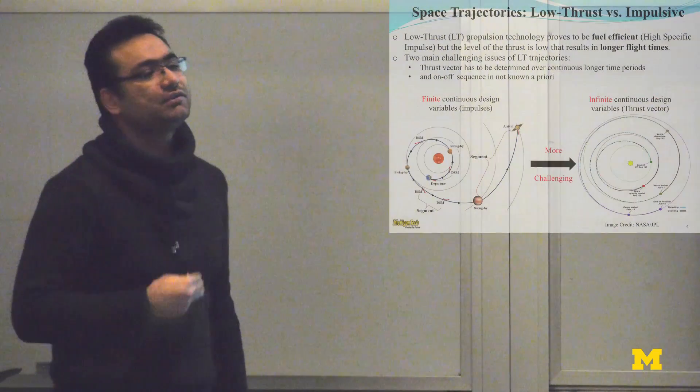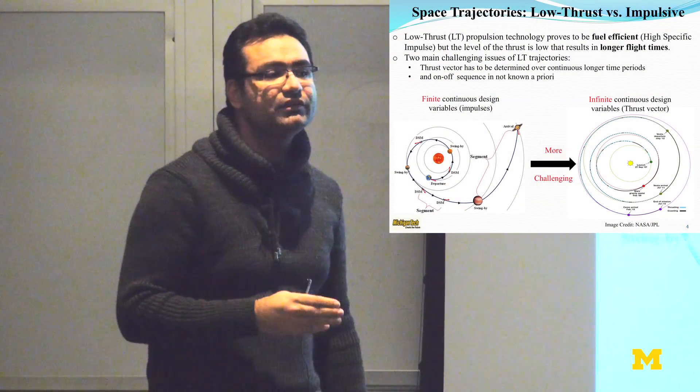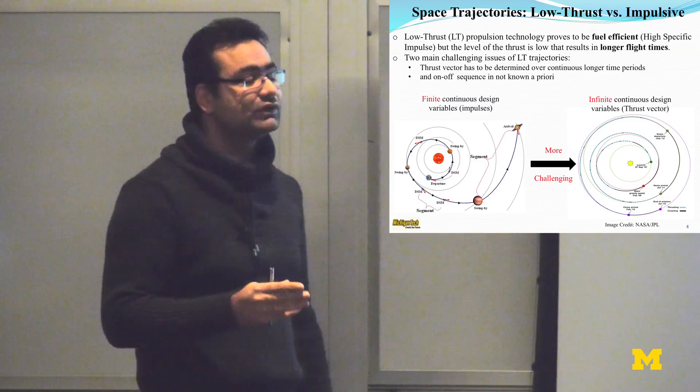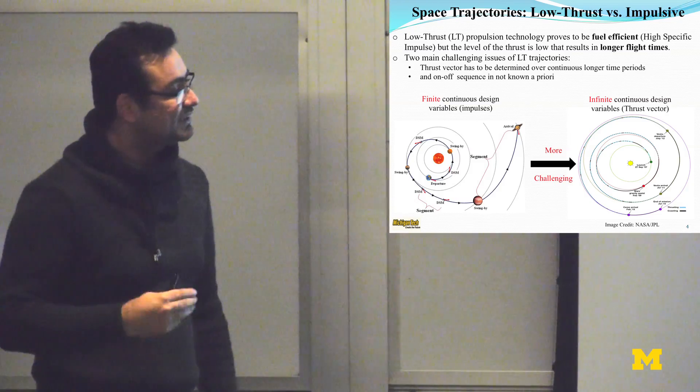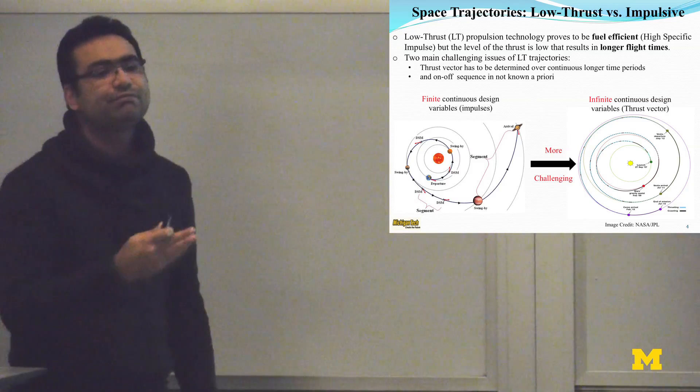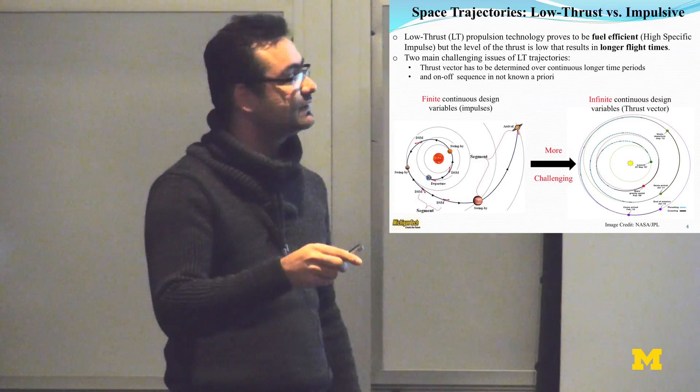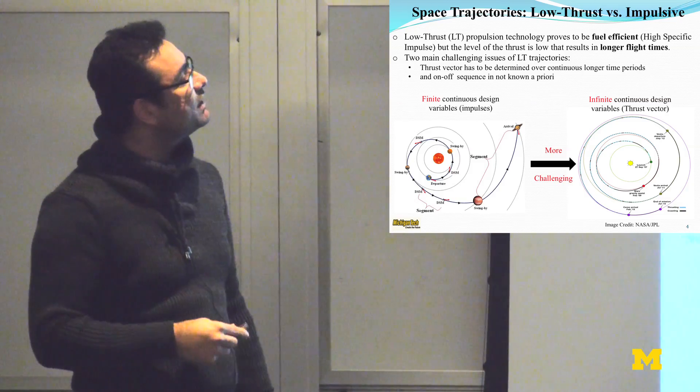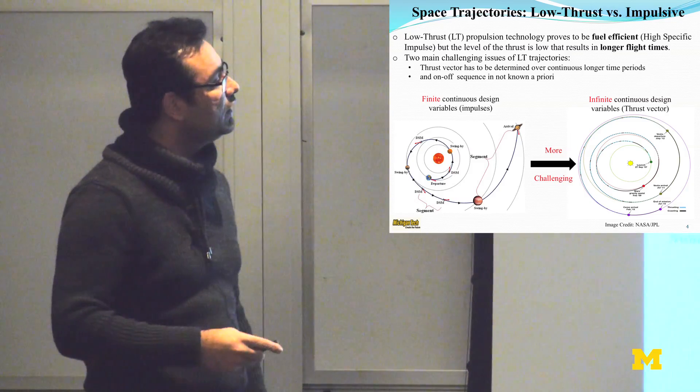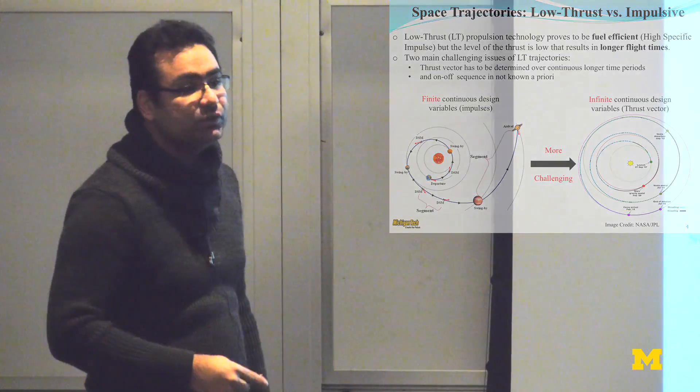But the challenging part is that if we move to the low-thrust engines, then the engines have to run for a longer time. As a consequence, we have to determine the direction and magnitude of the thrust force over a very, very longer period of time. Besides, there are cases in which the engines go off and on. So we have a modulation on the thrust. The problem thus becomes really challenging. But due to the advantage and efficiency in consuming fuel, most missions are targeted at using these low-thrust electrical engines.